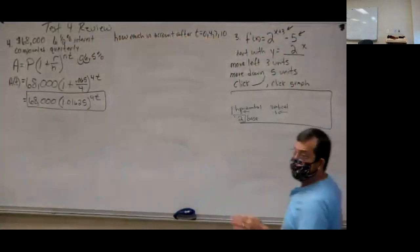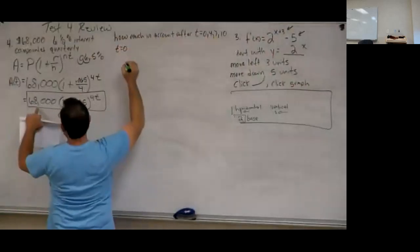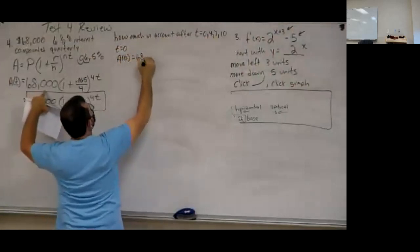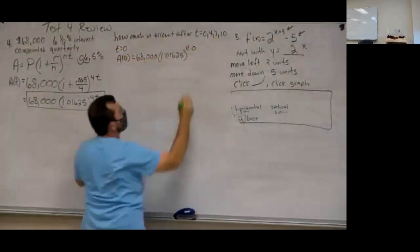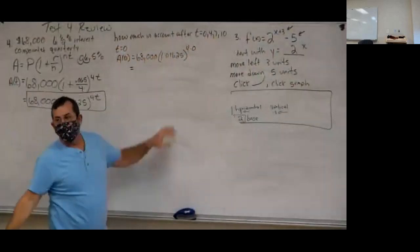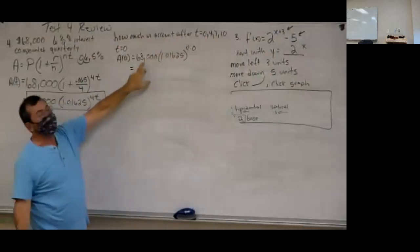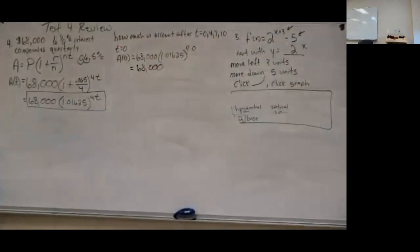Since it's an investment, I expect these numbers to be 68,000 or greater. Starting with T equals 0: A(0) equals 68,000 times 1.01625 raised to 4 times 0. That's anything to the zero power equals 1, so 1 times 68,000 equals 68,000. Makes sense — no time has passed, so there's still $68,000 in there.